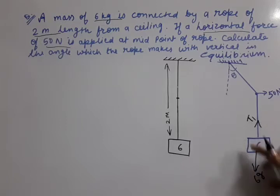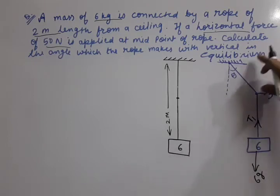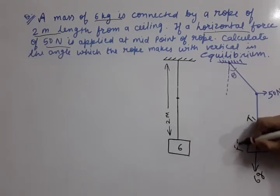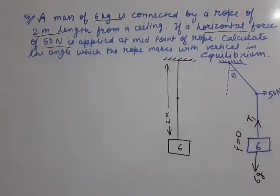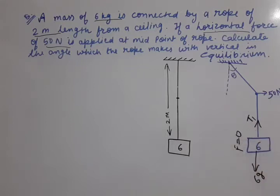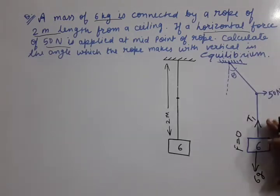Now what about the net force? Is this 6 kg moving? No. It is written in the question that the system is in equilibrium. Equilibrium means net force is 0. If the body were moving we would write F = MA, but the body is not moving, so we write F = 0. So we have completed all the forces of the 6 kg mass.